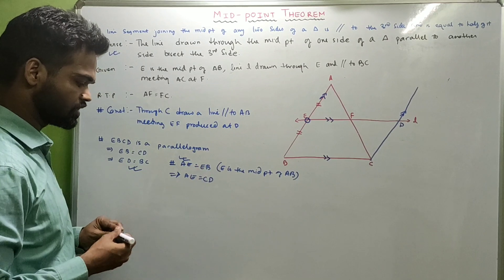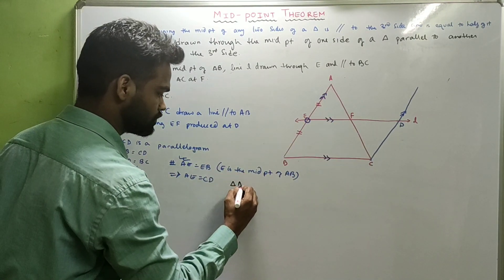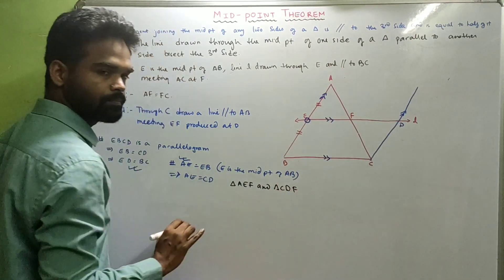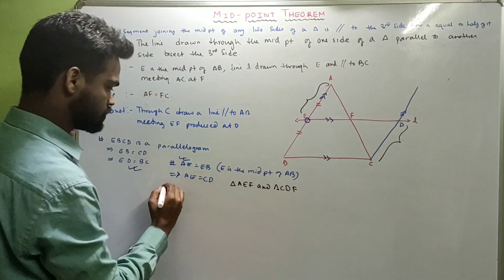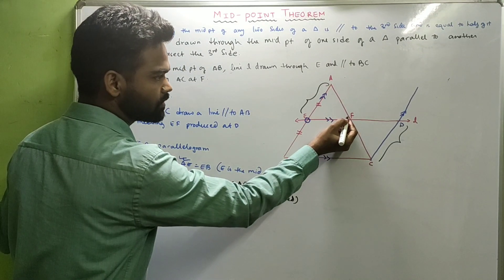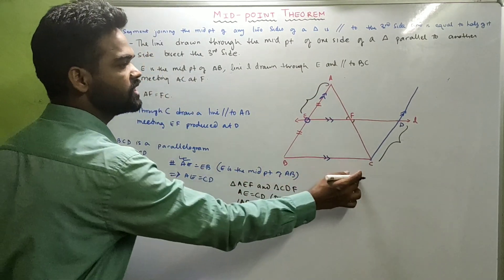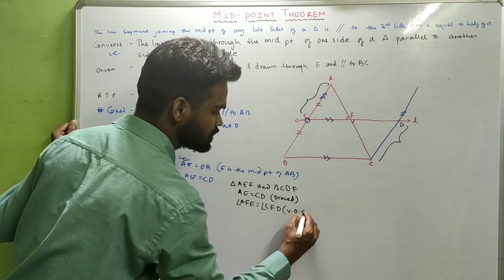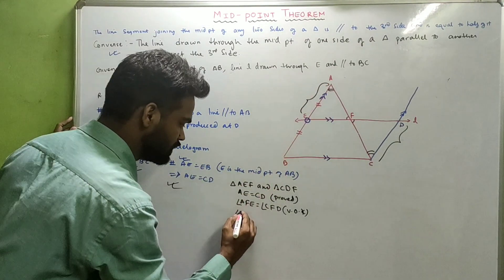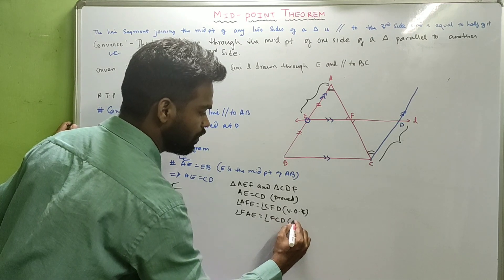Comparing these, AE equals CD. Now look at triangle AEF and triangle CDF. AE equals CD (just proved). Angle AFE equals angle CFD — vertically opposite angles. Angle FAE equals angle FCD — alternate angles, since AB is parallel to CD. Therefore triangle AEF is congruent to triangle CDF by Angle-Angle-Side.